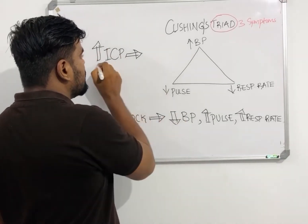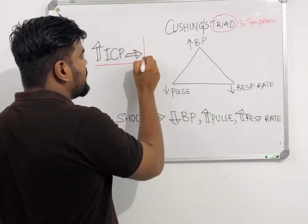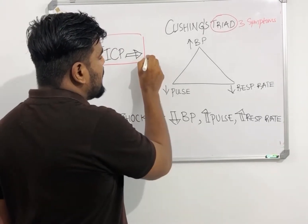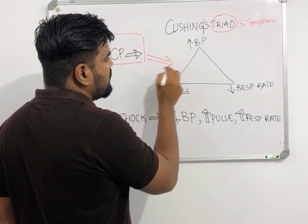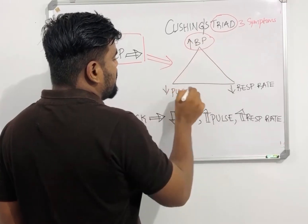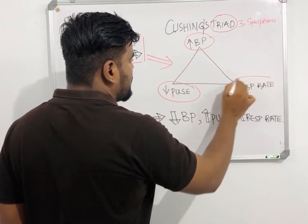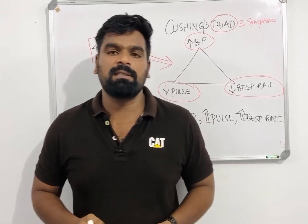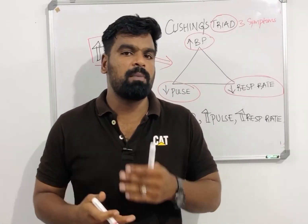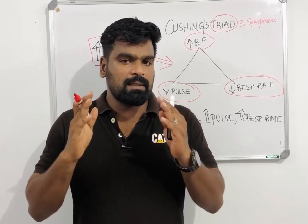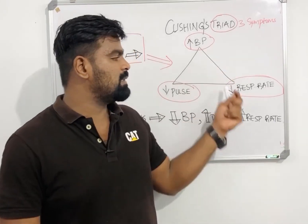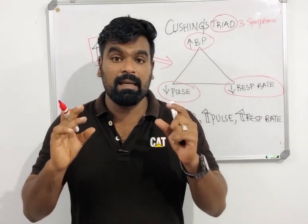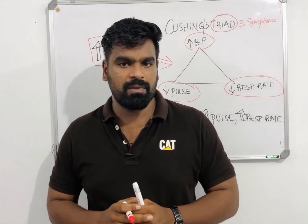Cushing's Triad is often seen when a patient has increased intracranial pressure. Once the patient's ICP is increased, you will see that BP is increased, pulse is decreased, and respiratory rate is decreased. This can be seen in neuro patients such as those with meningitis, hydrocephalus, cerebral palsy, or stroke. If you see these vitals in such patients, we can assume that the patient has increased intracranial pressure.